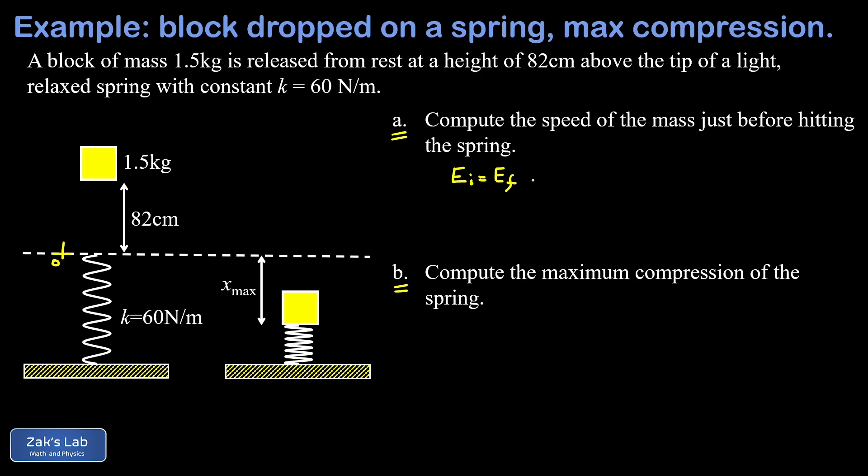So we're going to start by expressing energy conservation: E initial equals E final. We're going to use that origin where y equals zero at the tip of the spring. If I think about my initial energy, that's all gravitational potential energy because there's no kinetic energy going on, so I'm going to call that mg y initial.